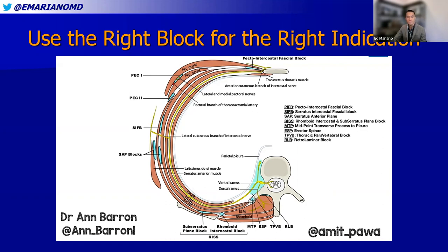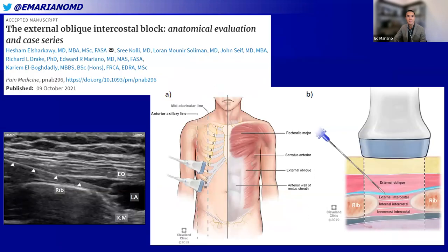We have a lot of different blocks for the chest wall, and sometimes this feels overly complicated. For chest wall blocks alone — and this figure is already outdated — we have pectoralis intercostal fascial plane blocks, PEC1, PEC2, serratus plane blocks, subserratus plane, rhomboid intercostal blocks, in addition to the erector spinae plane and paravertebral. These options can be intimidating, making you wonder what the role is for many of these blocks in clinical practice, especially if anesthesiologists feel reluctant to try new blocks until they see better data.